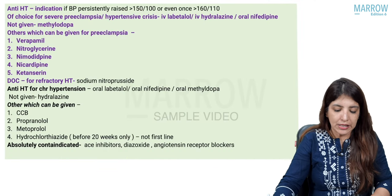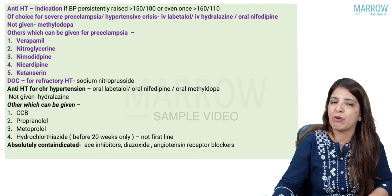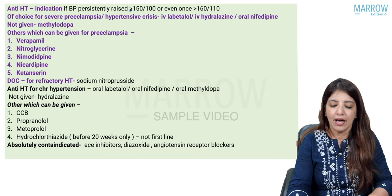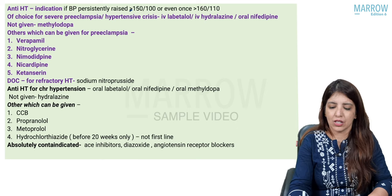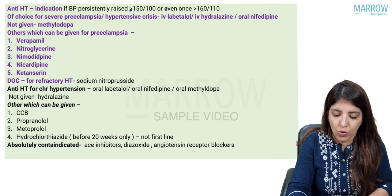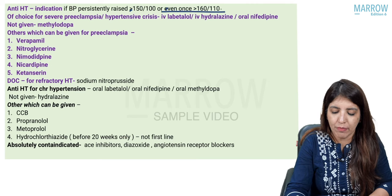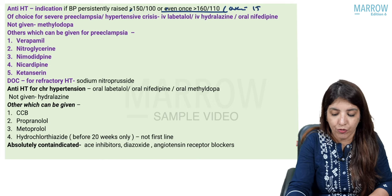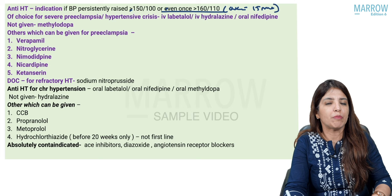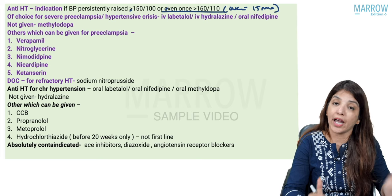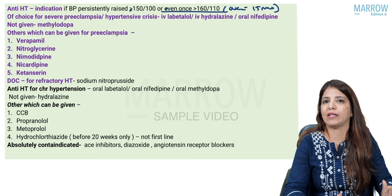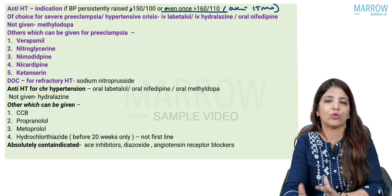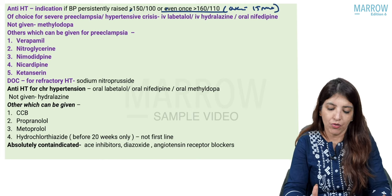For antihypertensives, the indication according to NICE guidelines is BP persistently raised more than or equal to 150 by 100, or even once if you get BP 160 by 110 — meaning you check again after 15 minutes, and if still 160 by 110, give antihypertensives and classify as preeclampsia with severe features.